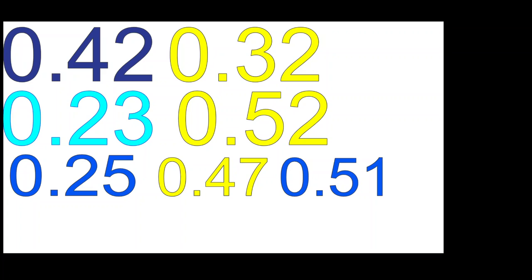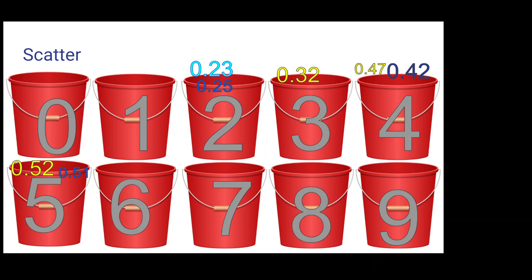First, we're going to create an array of size 10. Each of these arrays is going to be used as a bucket for storing the elements. Then we're going to scatter the values into each respective bucket. The ranges are 0 to 1, 1 to 2, 2 to 3, 3 to 4, 4 to 5.